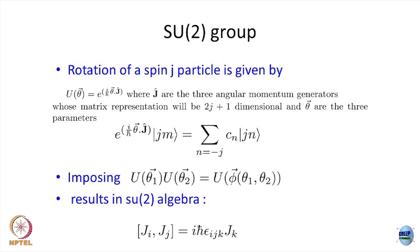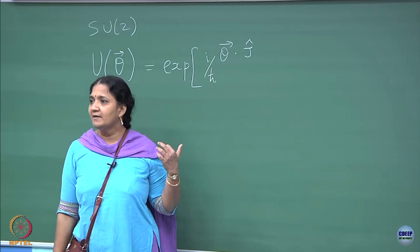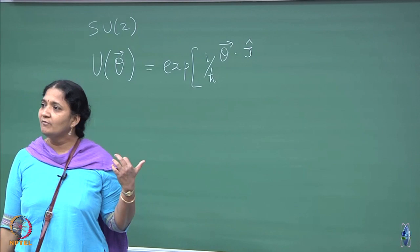For the SU(2) group, a general element U(theta) will have an exponential form: it is the exponential of (i/ℏ) times theta dot the generators. The number of parameters will always be equal to the number of generators. In the case of rotation I wrote it as orbital angular momentum; here I am going to write it as total angular momentum, which includes spin angular momentum and orbital angular momentum. This is your general element where J's are the generators.